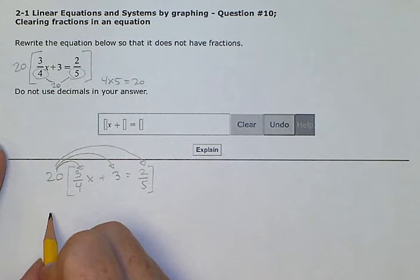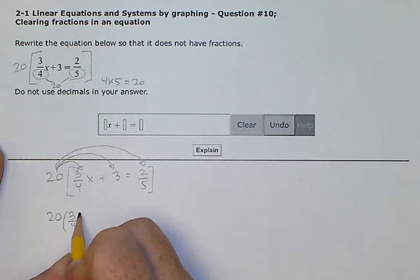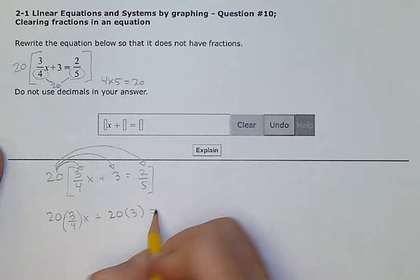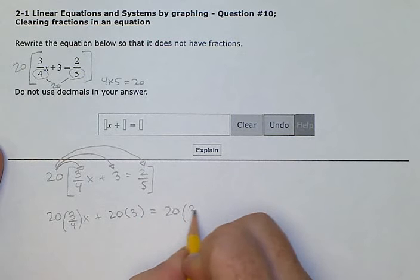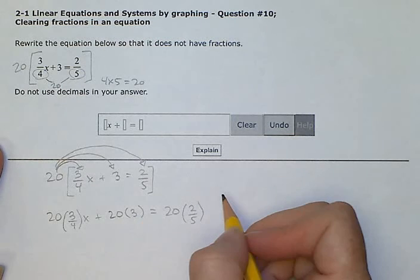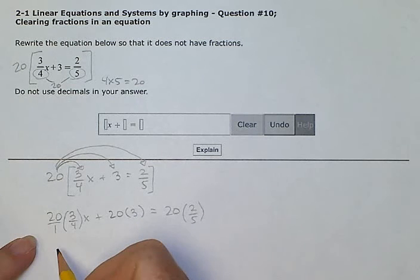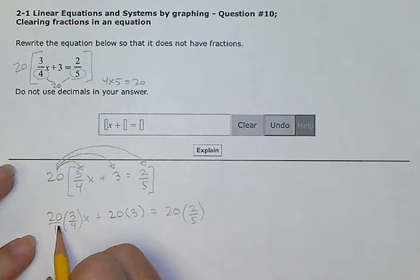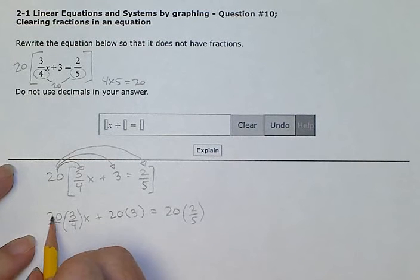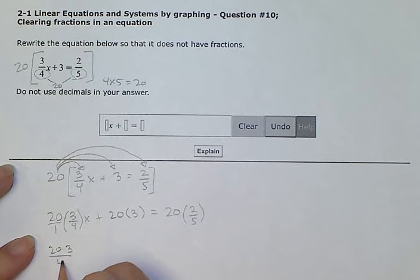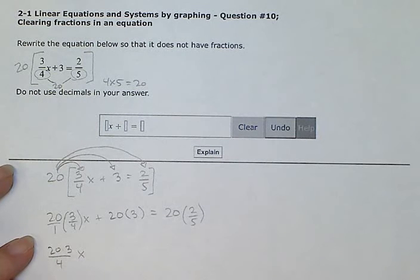So I have 20 times 3 fourths x plus 20 times 3 equals 20 times 2 fifths. So when I have a whole number, it's just like I have a fraction but divided by 1. So I'm going to multiply these two fractions by multiplying the tops together. 20 times 3 and then dividing by 4. And it's still multiplied by x. 20 times 3 is 60. 60 divided by 4 is 15x.